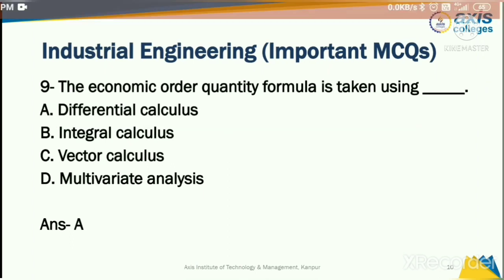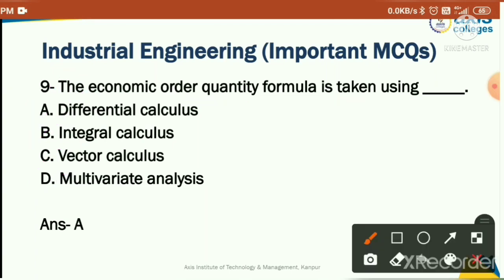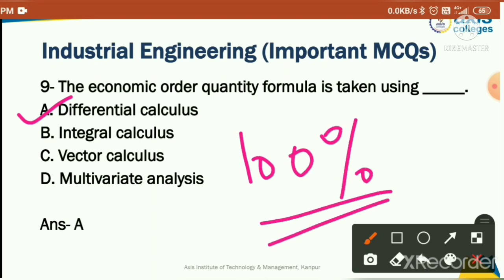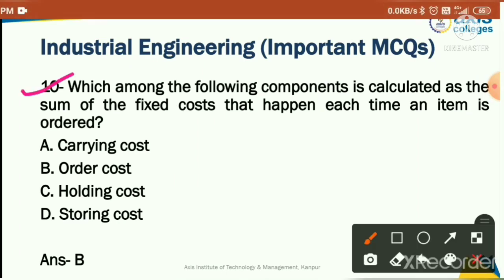The economic order quantity formula is derived from which branch of mathematics? Options: differential calculus, integral calculus, vector calculus, or multivariate analysis. The correct answer is option A: differential calculus. This is a very important question — chances of it appearing in exams are 100%.